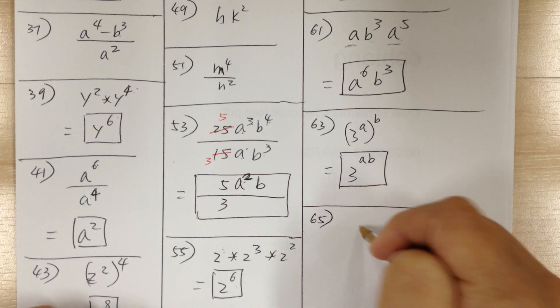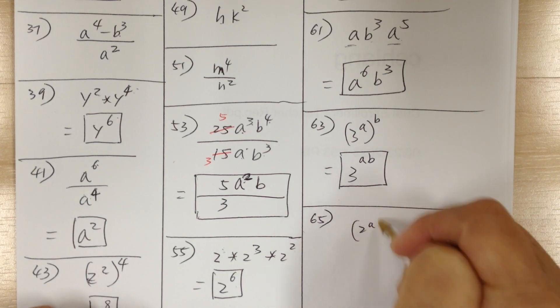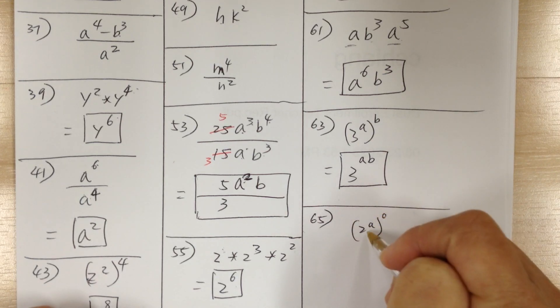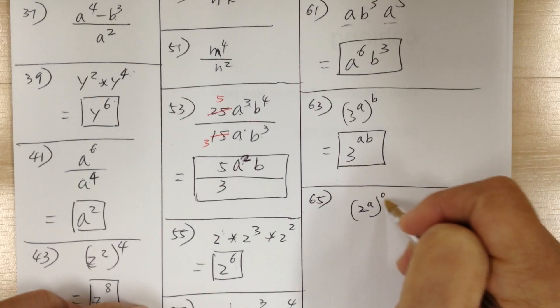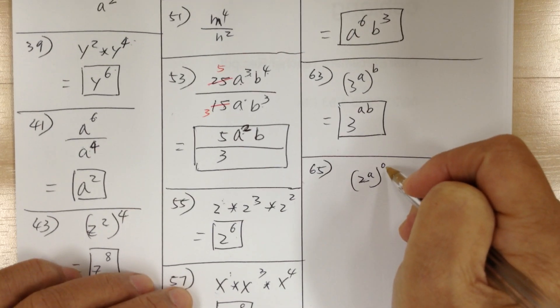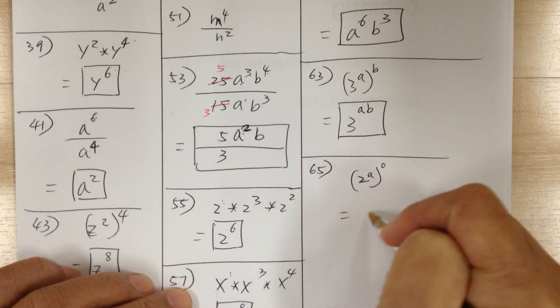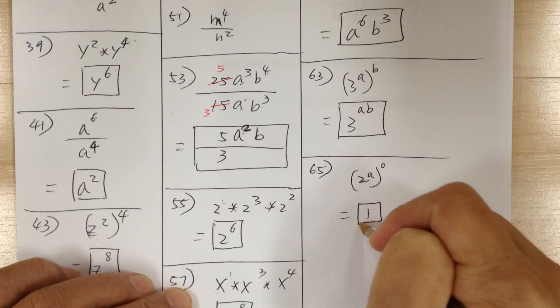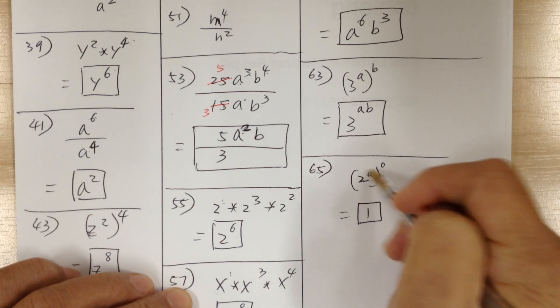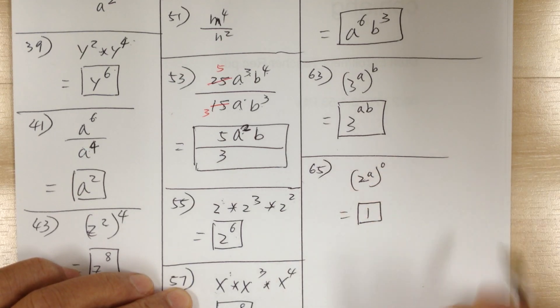Number 65, you got 2 to the a to the 0 power. Anything to the 0 power is equal to 1. So this whole thing to the 0 power is 1.